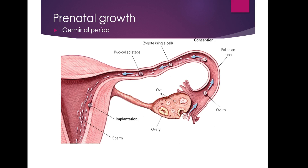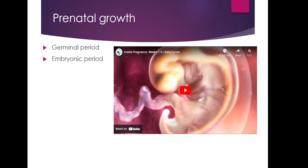Once conception has occurred, the cell starts to duplicate itself. It goes from one cell to two cells to four cells to eight cells and so on, duplicating as it moves its way down the fallopian tube toward the uterus. This period is called the germinal period. The conceptus, as they call it, has not implanted yet in the uterus, so it's making its way down the fallopian tube, dividing and replicating as it goes. Implantation is a separate stage of development — it takes us out of the germinal period and into the embryonic period once implantation has occurred.